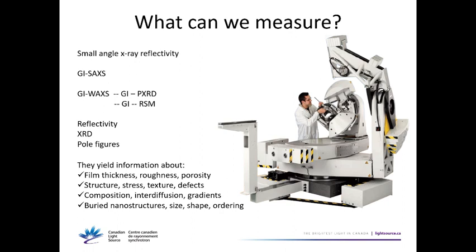For thin-films, we can measure using a large variety of techniques, and they have in common that we usually use grazing incidence, because we want our X-rays to attenuate mostly in that thin-film surface. So we do grazing incidence powder X-ray diffraction, grazing incidence wide-angle X-ray scattering, grazing incidence reciprocal space maps, small-angle X-ray scattering, and X-ray reflectivity. With these techniques we get information about thickness, roughness, porosity, structure, stress, texture, depth defects, and many structural parameters.